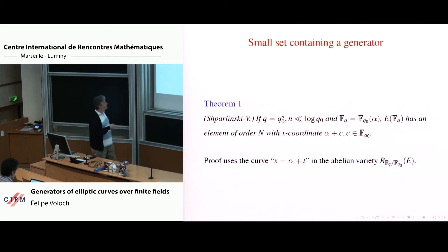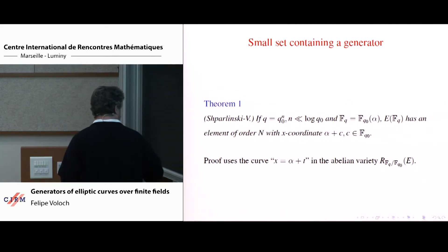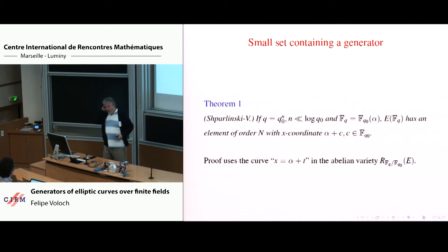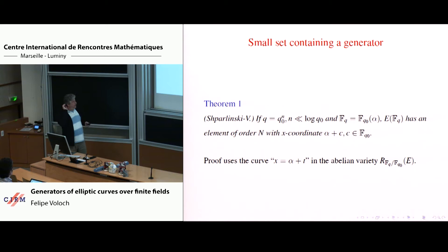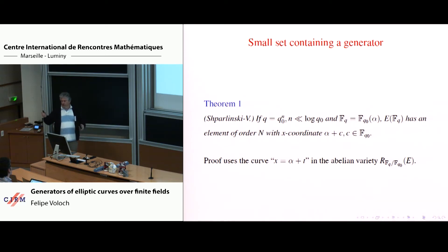Of course these conditions are restrictive. There is an additional result: n is bounded by a small log q₀, and the constant is explicit — something like one over two log two. This is also true when q₀ is sufficiently large; you have to assume q₀ is sufficiently large, except for finitely many exceptions.